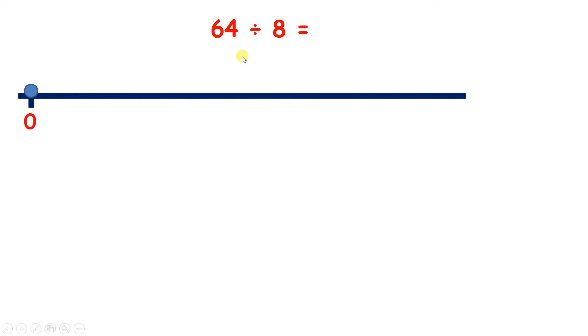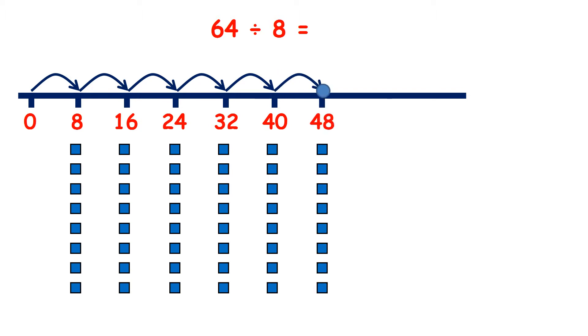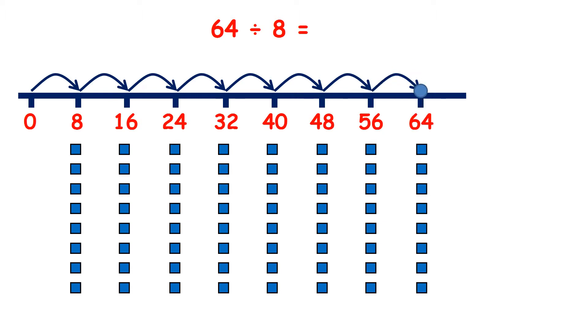Now we have 64 divided by 8, so counting up in steps of 8, we have 8, 16, 24, 32, 40, 48, 56, 64. So that's 1, 2, 3, 4, 5, 6, 7, 8 jumps, so we have 8 groups of 8.